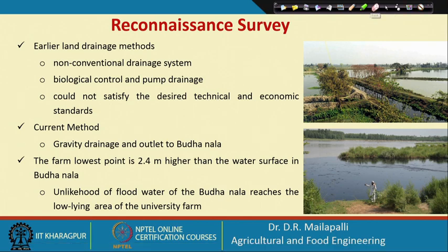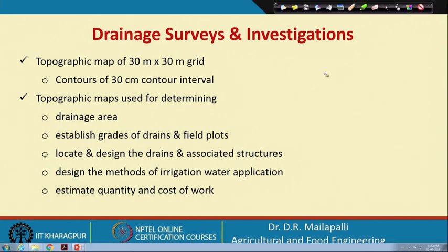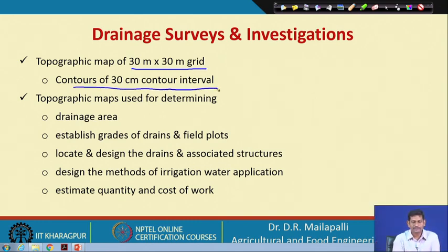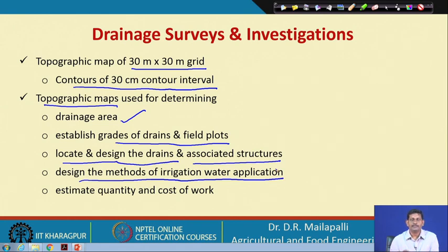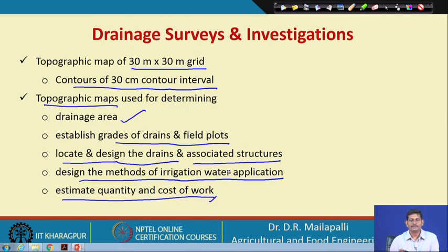For drainage survey investigations, a topographic map was prepared using a 30-meter by 30-meter grid with a contour interval of 30 centimeters based on elevations across the entire farm. These topographic maps are used to determine drainage areas, establish grades of drains and field plots, locate and design drains and associated structures, design irrigation water application methods, estimate quantity and cost of work, and decide between options like contour farming versus furrow irrigation.